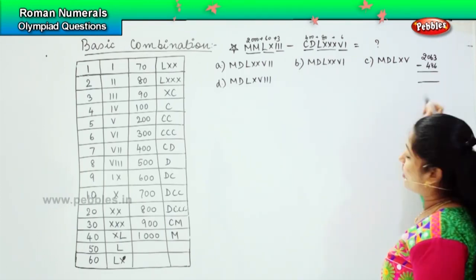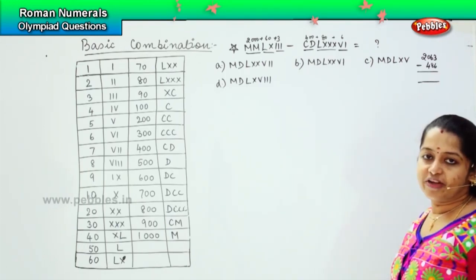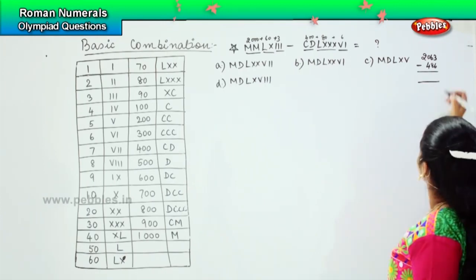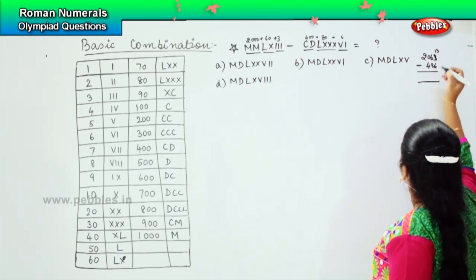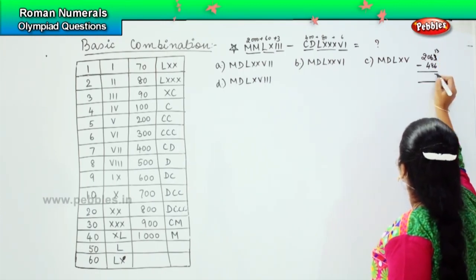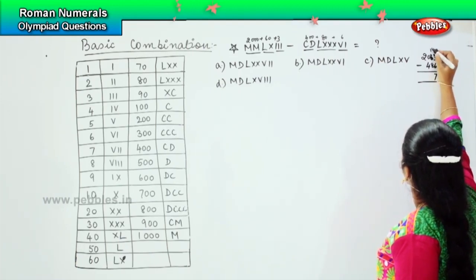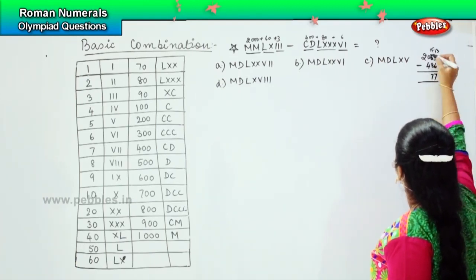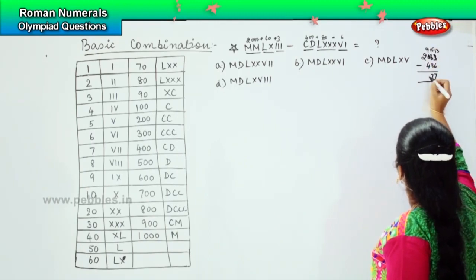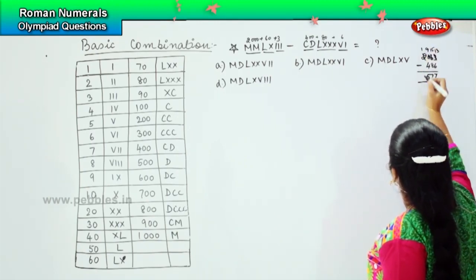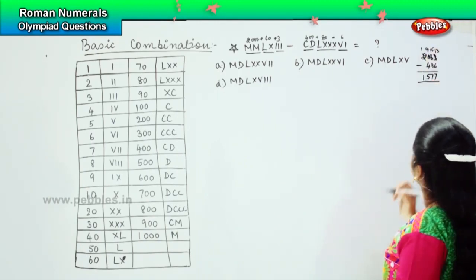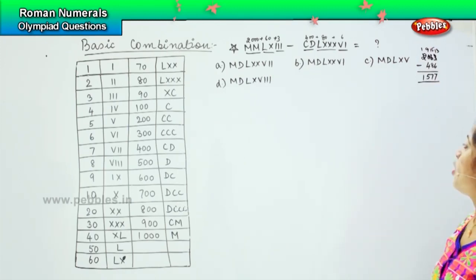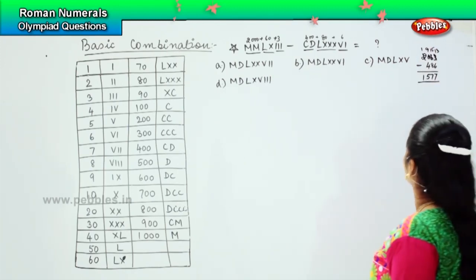Now we will try to find the answer. 3 minus 6 — we borrow, so 13 minus 6 is 7; 15 minus 8 is 7; 9 minus 4 is 5; and 1. So your answer is 1577.